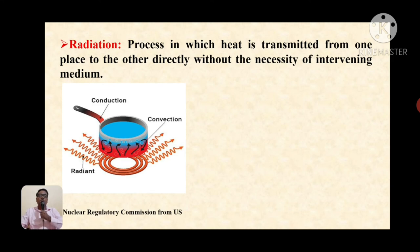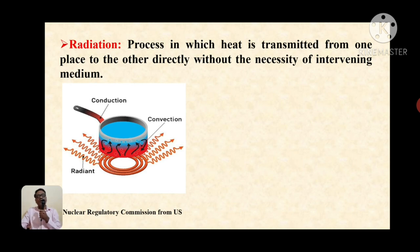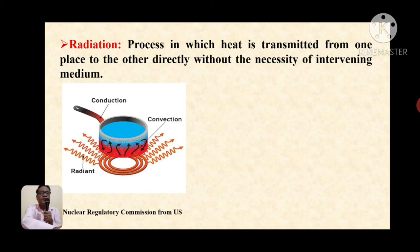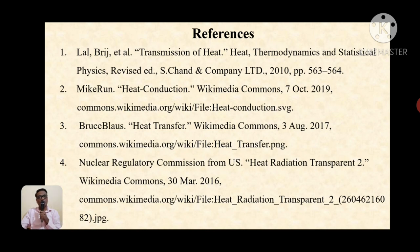We now see the radiation process. The third mode of heat transfer is radiation — the process in which heat is transmitted from one place to another directly, without the necessity of an intervening medium. In this figure, we can see a pan on the flame, and we can see the radiation of heat shown by those spiral-type arrows — it is radiation of heat. A well-known example is the Sun: heat from the Sun reaching Earth is an example of radiation. These are the references I have used for this PowerPoint presentation preparation. Thank you.